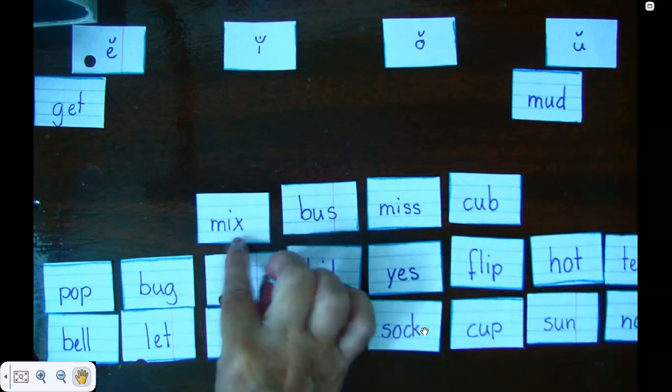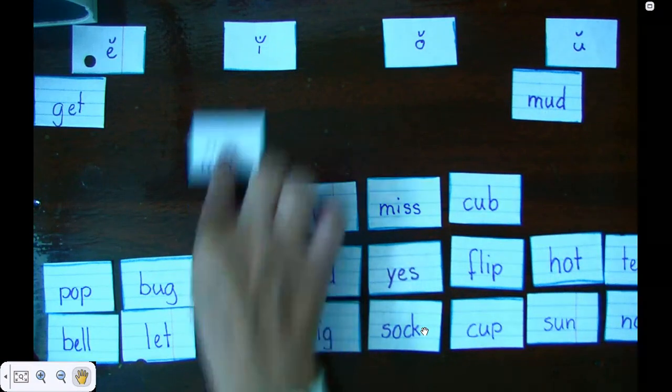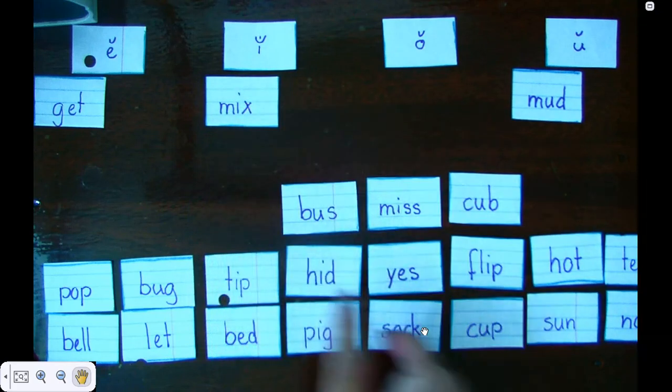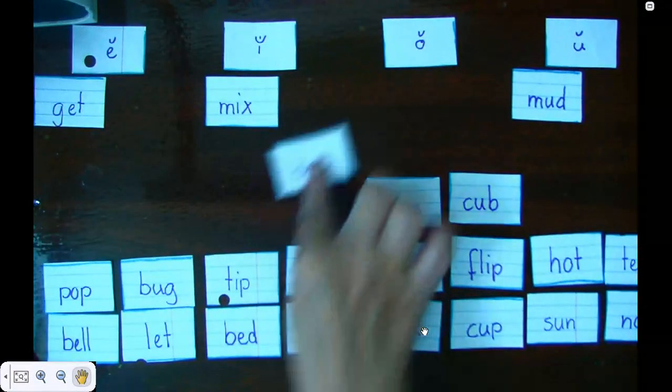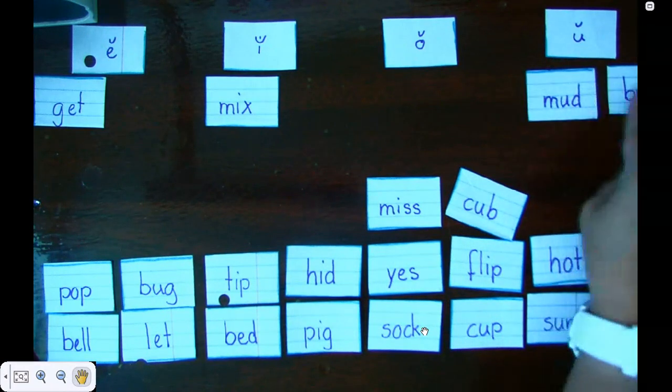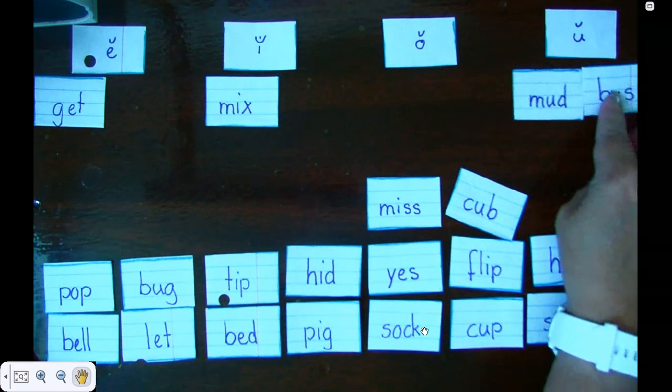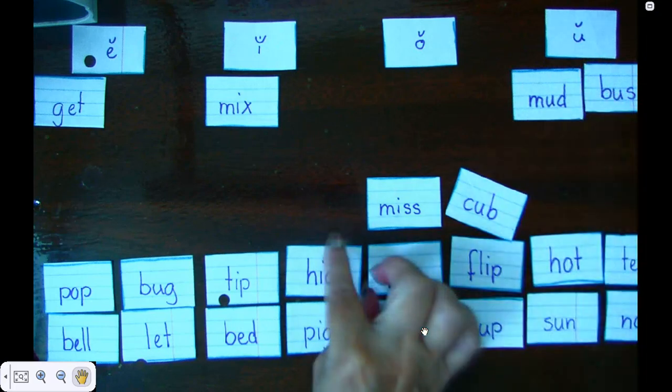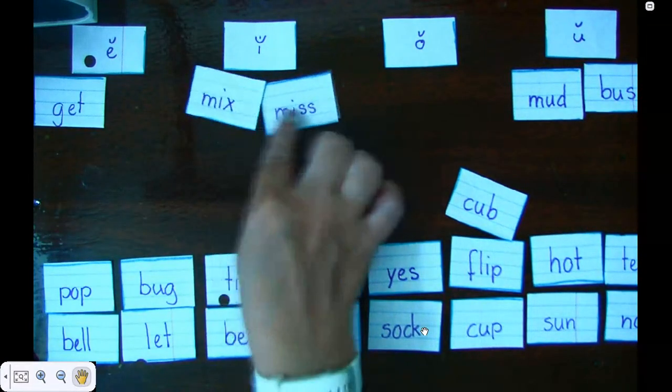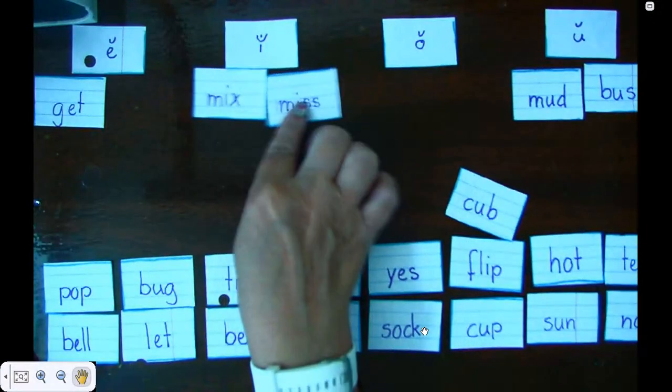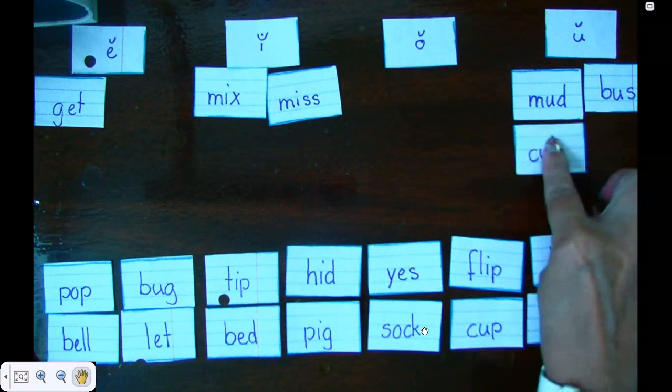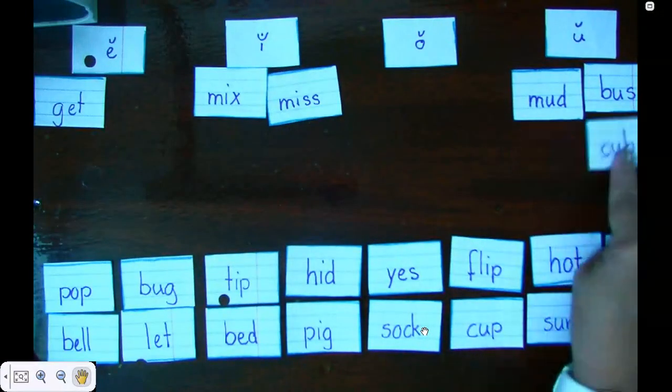I have mix, and the vowel is the I, so it goes under my I column. Bus has a U, so it goes in my U column. Miss has an I, so it goes under my I column. Cub has a U, it goes under my U column. Let me put it over here.